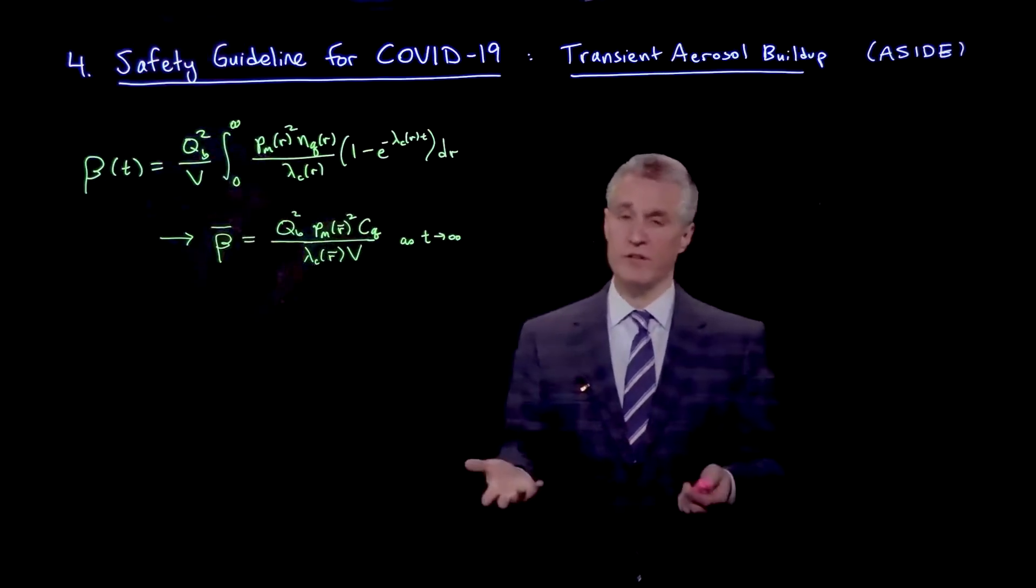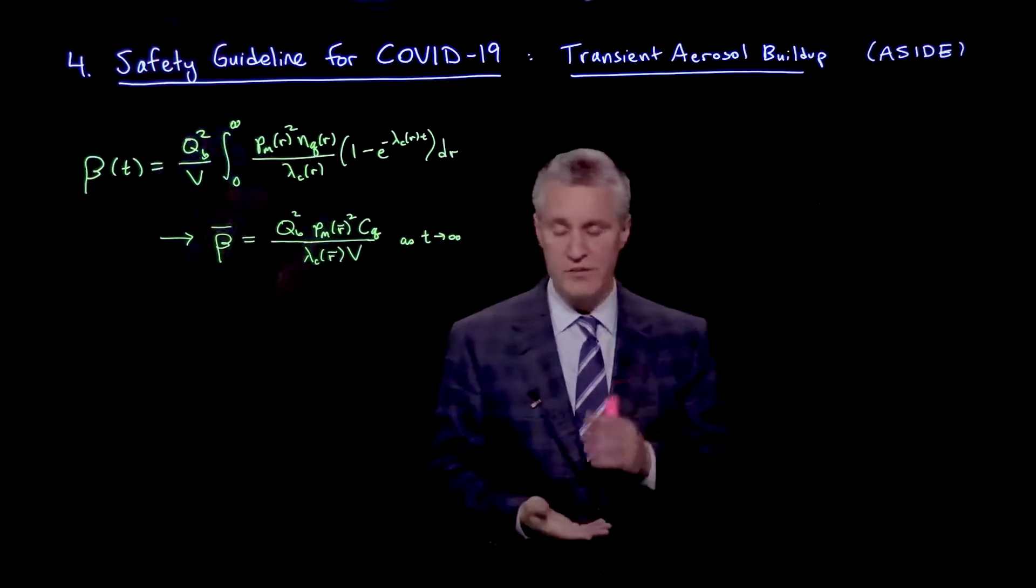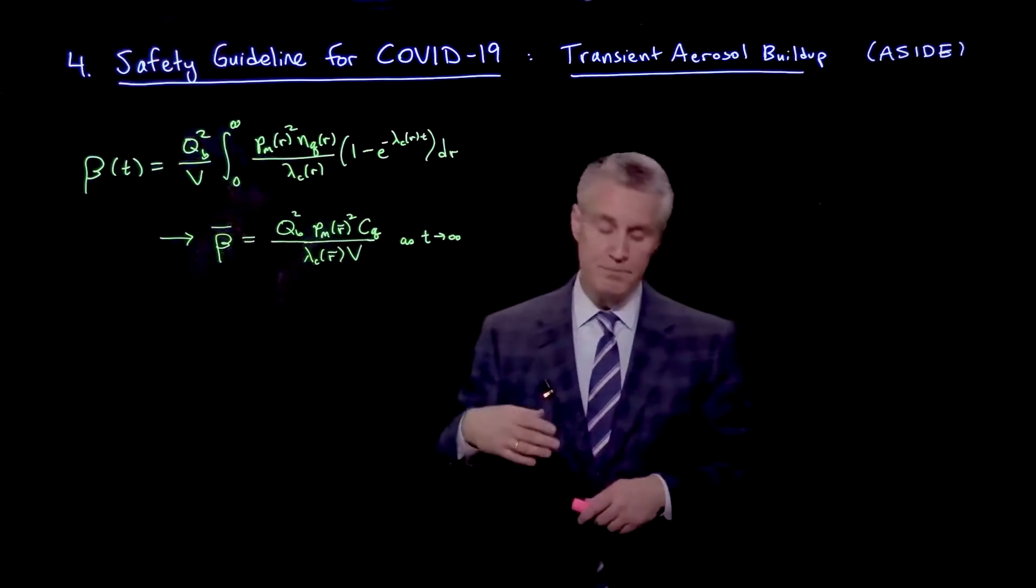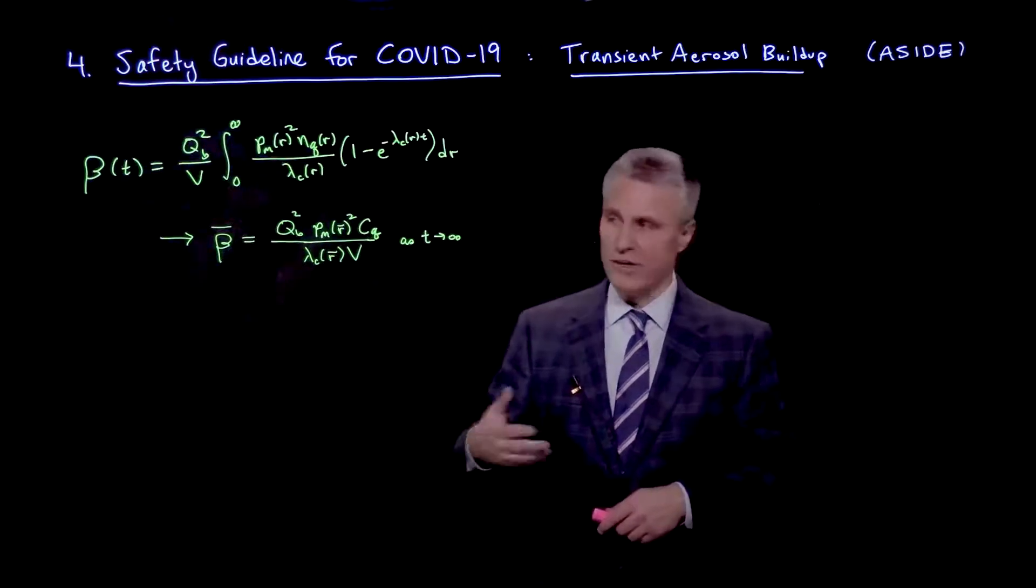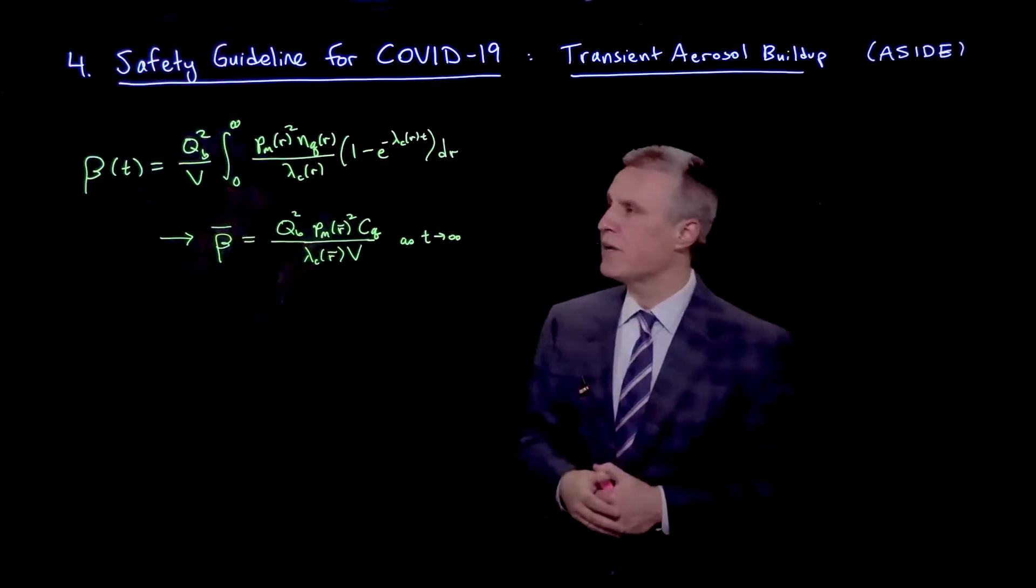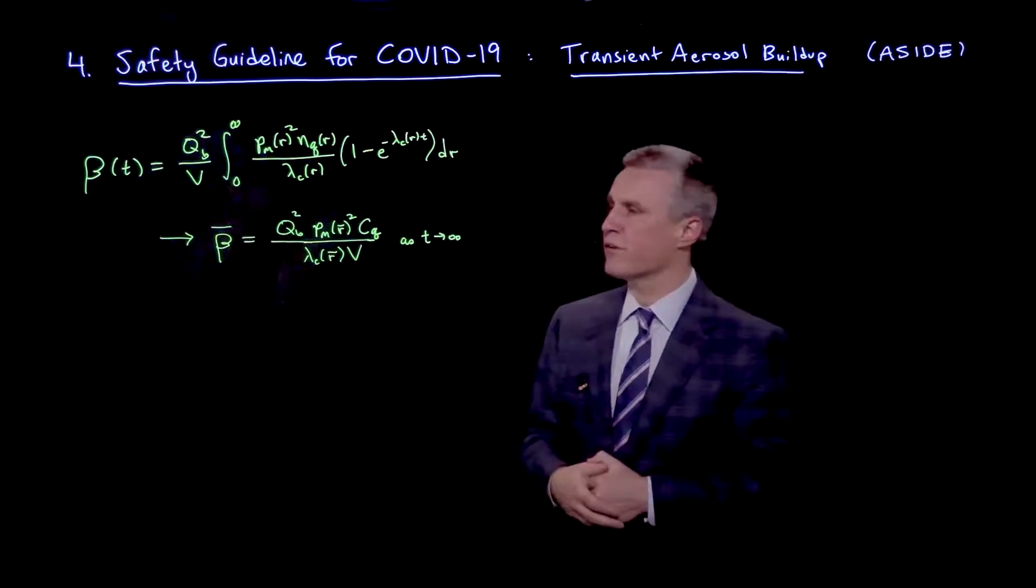And pm is the mass transmission factor, which depends on radius. And lambda c is the total relaxation rate involving sedimentation or settling, viral deactivation, and filtration. And that also depends on r.